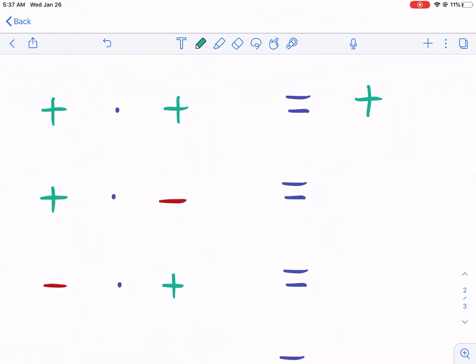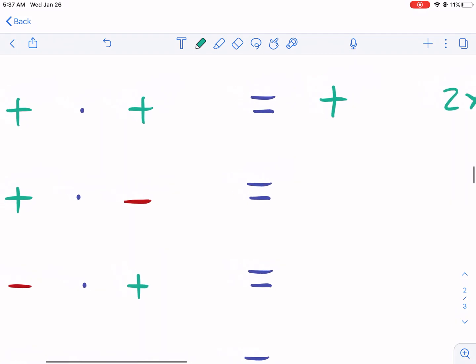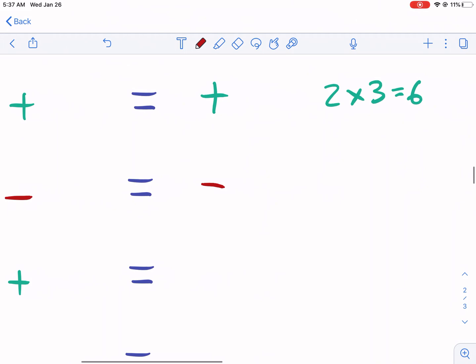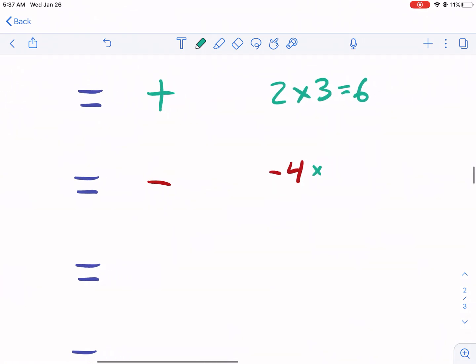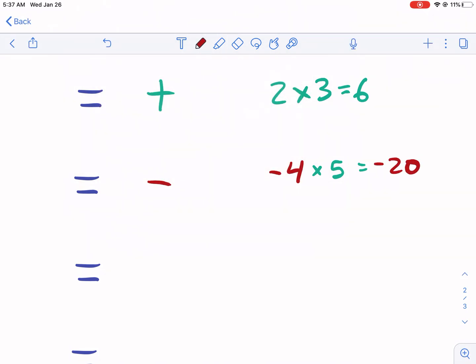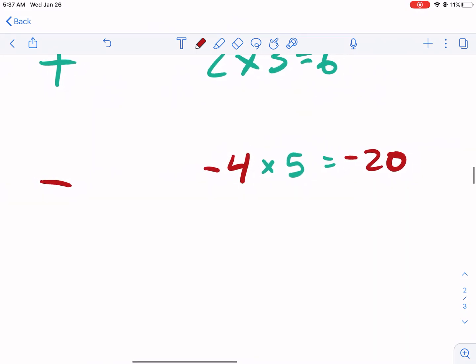If we have a positive times a negative, this is where we have the new rules. So we have a positive times a negative, we're going to get a negative number. So if we have, let's say, a negative four times five, we're going to get a negative 20 as a result, because it's a negative times a positive. There's one negative times one positive, the result is going to be a negative number.